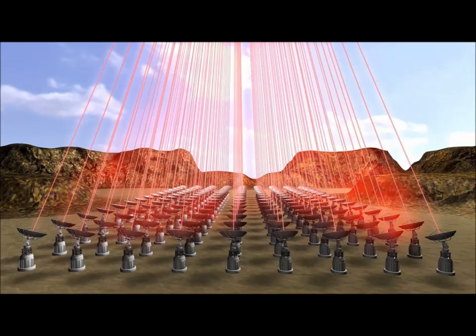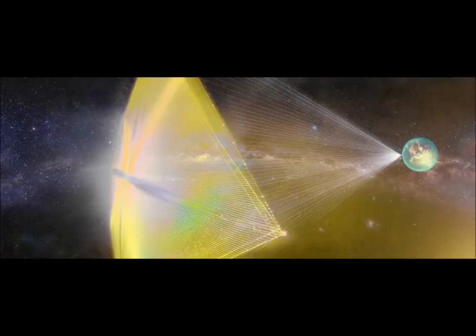As an example of demonstrable progress, Klupar highlighted experimental four-gram satellites called sprites, built and tested by Cornell. In June 2017, a fleet of six sprites rode into space aboard an Indian-built rocket.